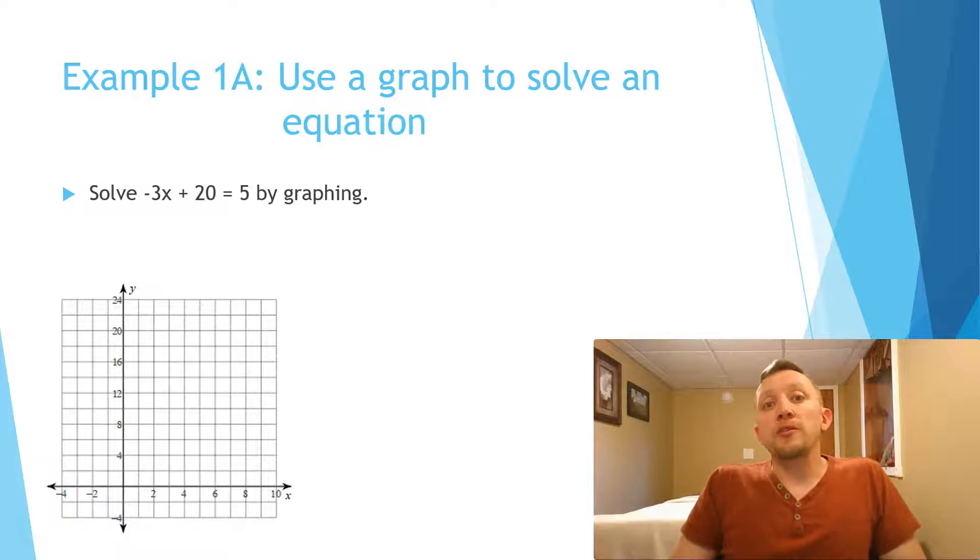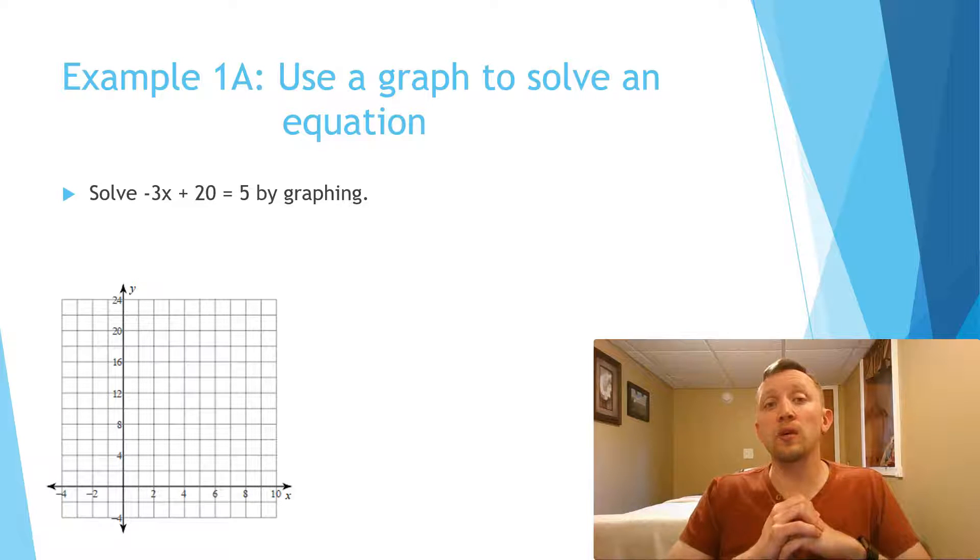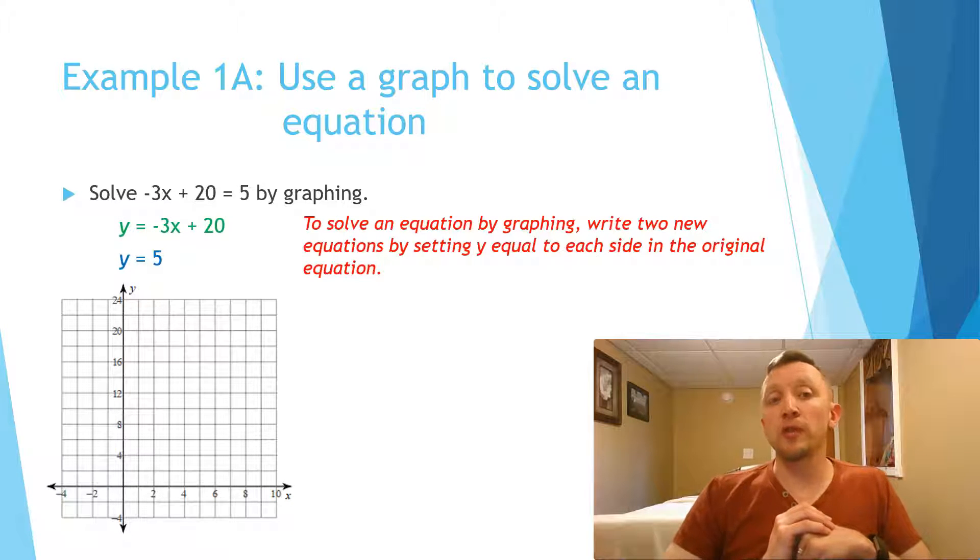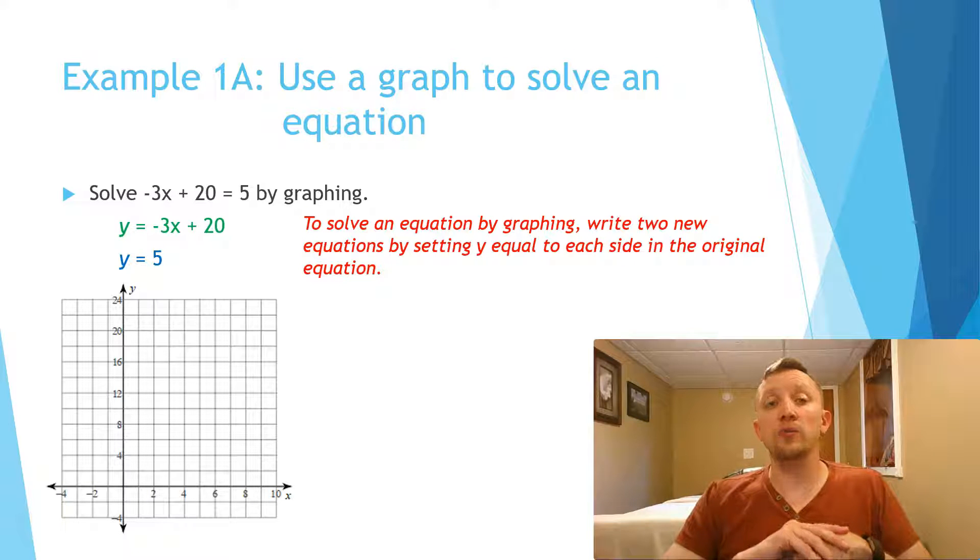In this first example, we're asked to use a graph to solve an equation. So our equation is -3x + 20 = 5. Now, I know we could solve this algebraically, but the idea here is to understand how to solve this graphically. What we're going to do is break this equation up into two separate equations: the first equation is y = -3x + 20, and the second equation is y = 5.